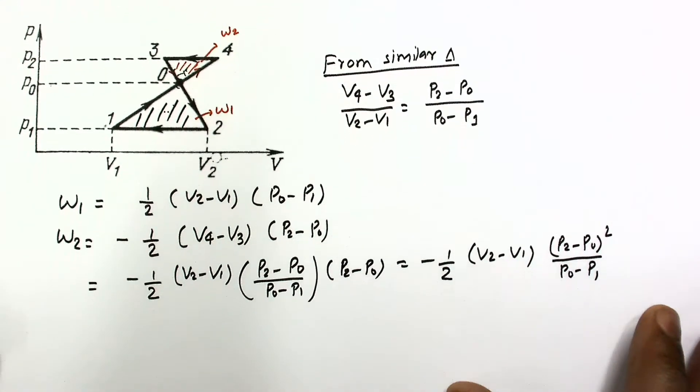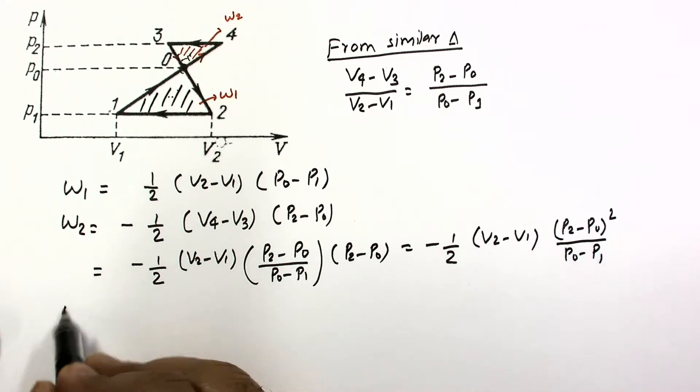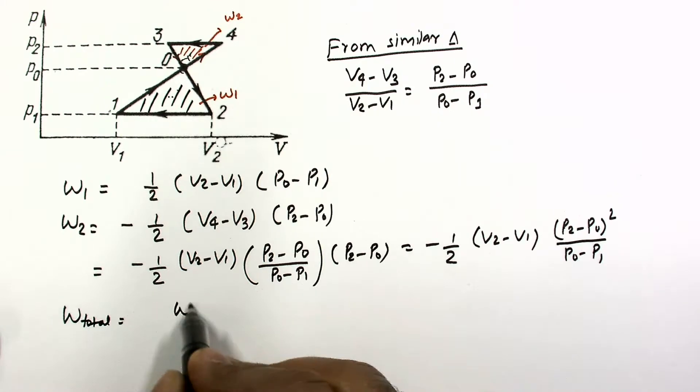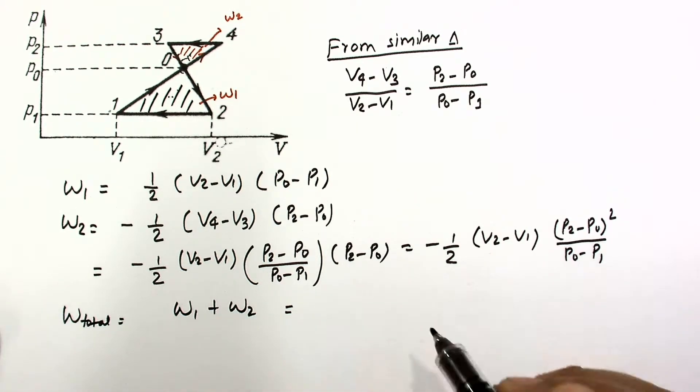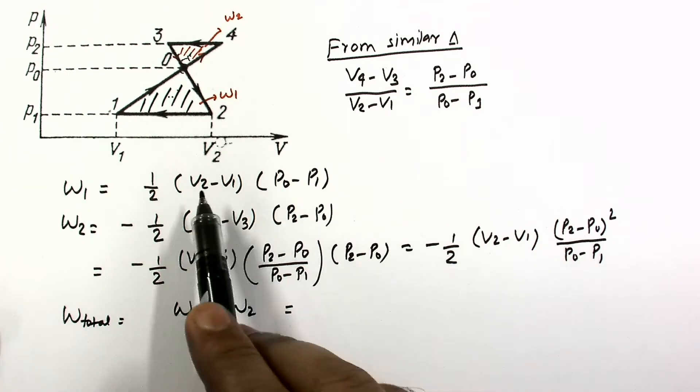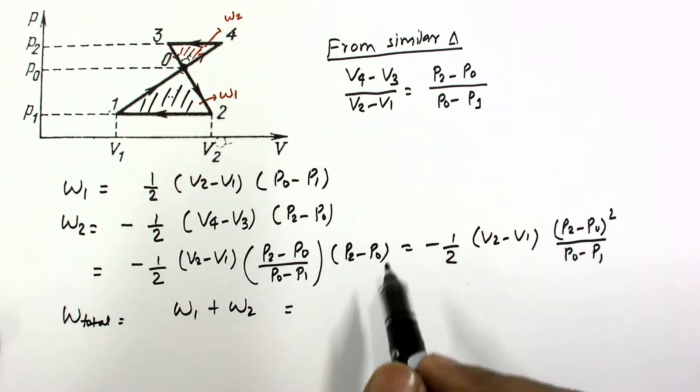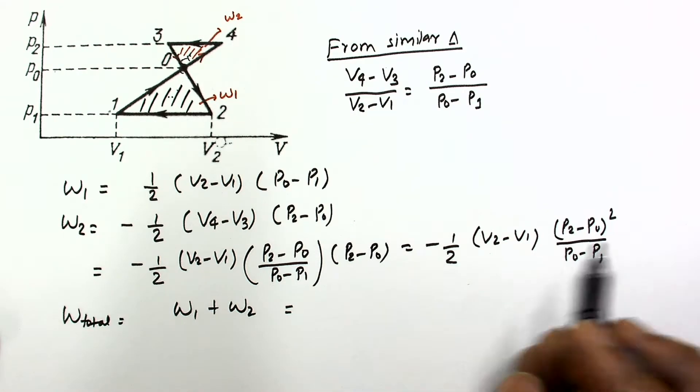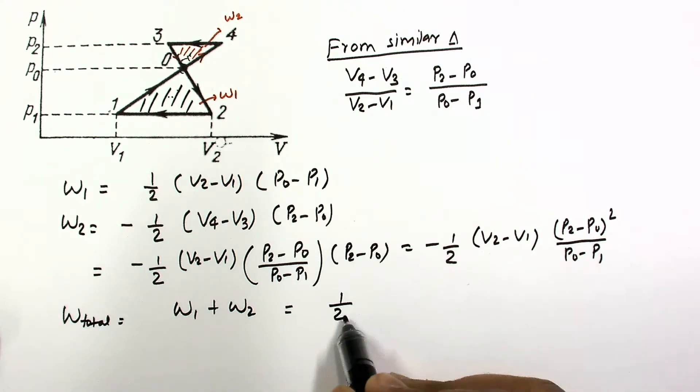So total work, we have to add these two expressions. In the cyclic process, W total is W1 plus W2, where W2 is negative. So when we put these two expressions, half V2 minus V1 will be common.